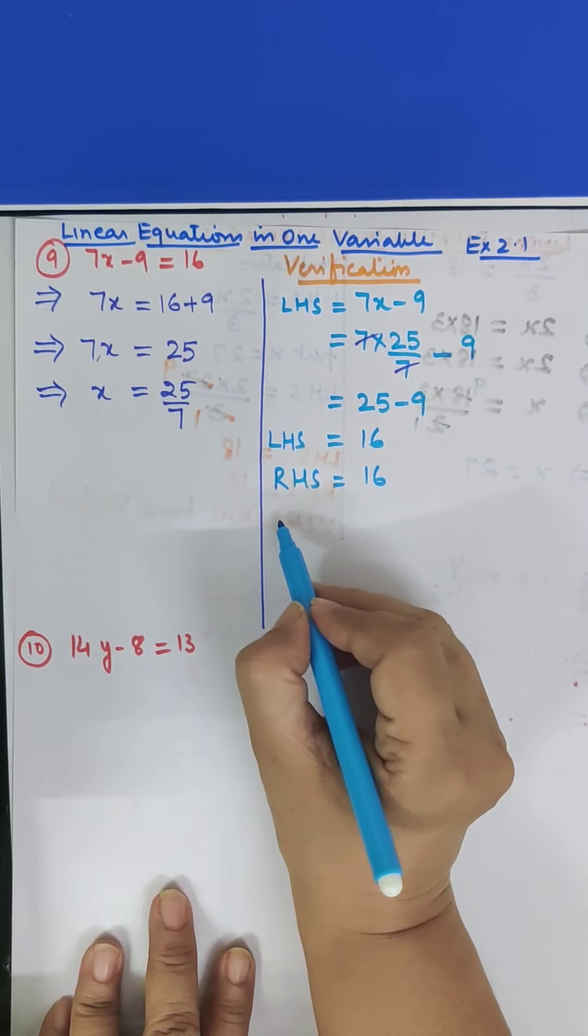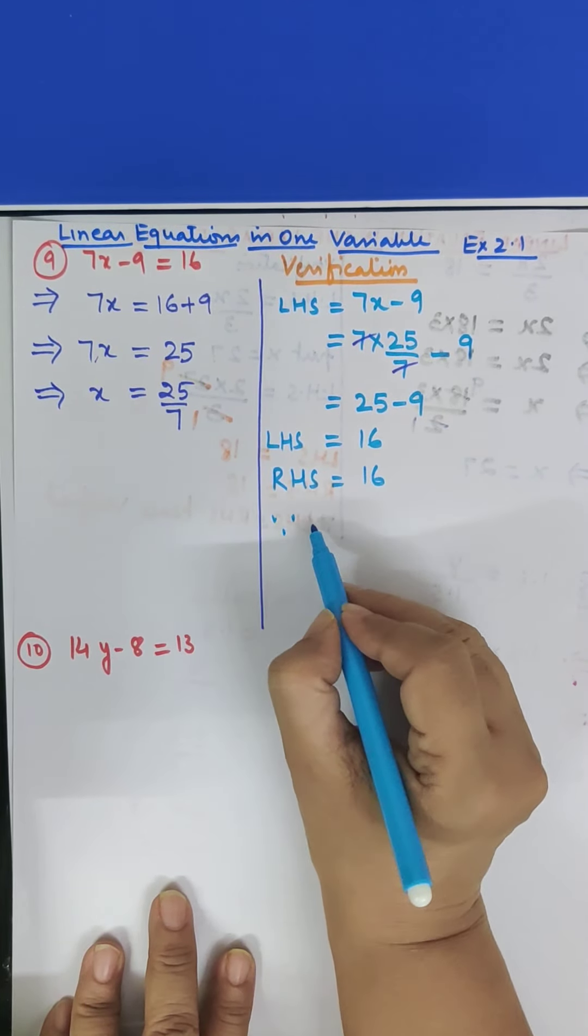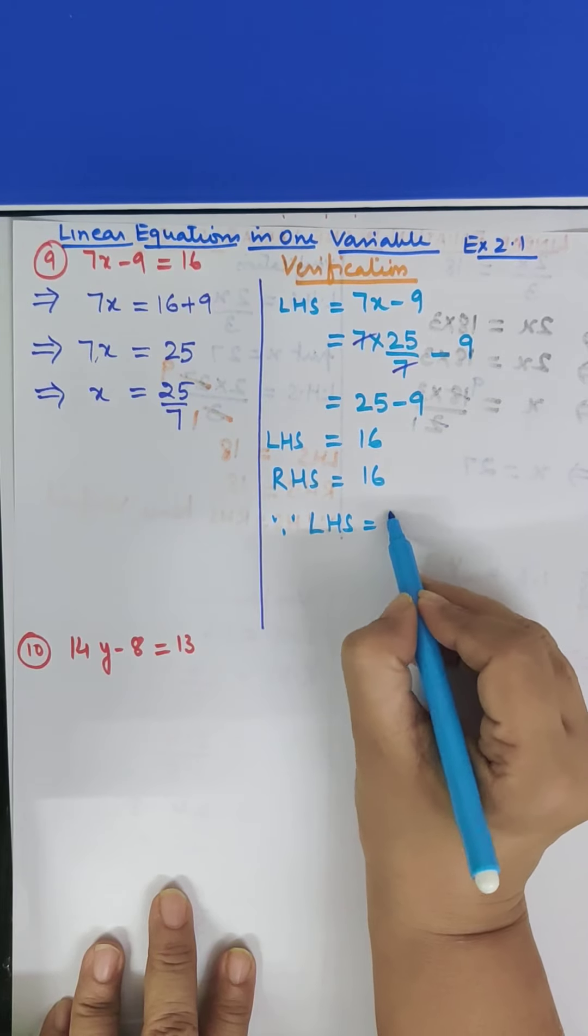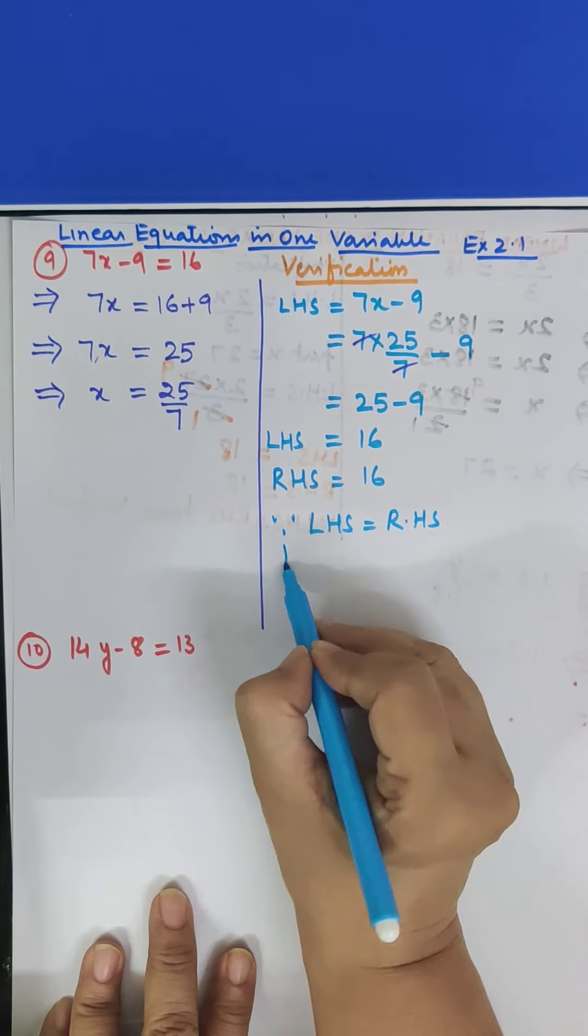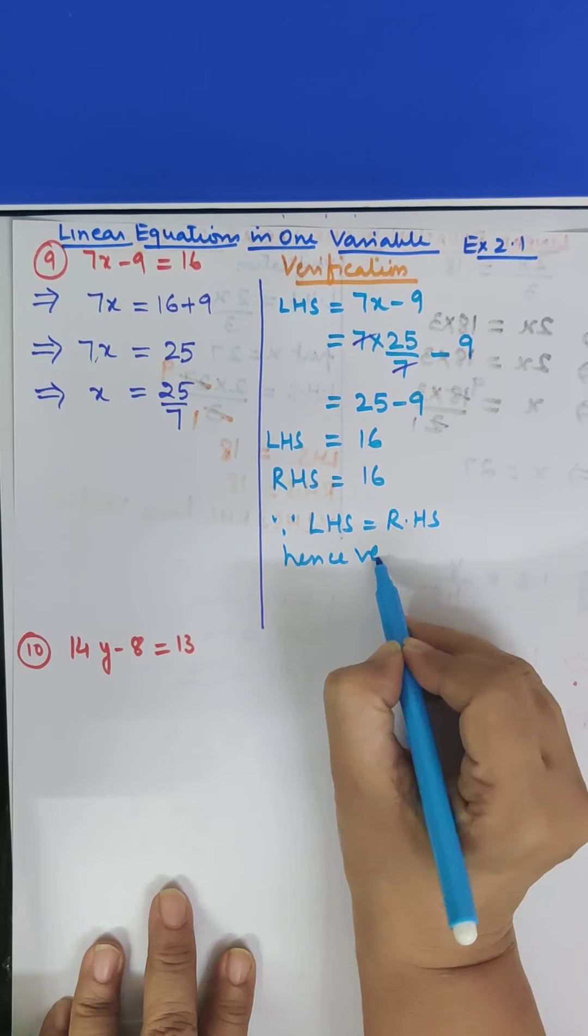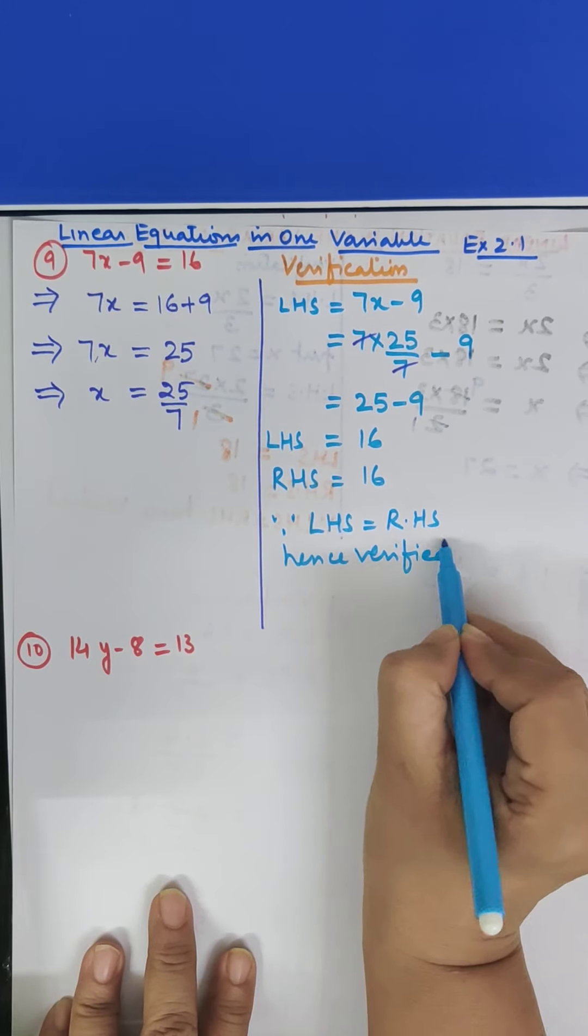LHS is 16. RHS is also 16. So it is verified. Since LHS is equal to RHS. Hence, verified.